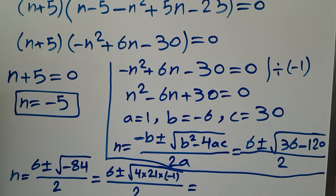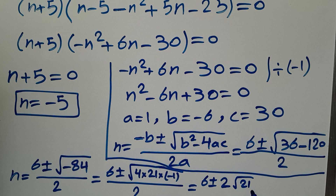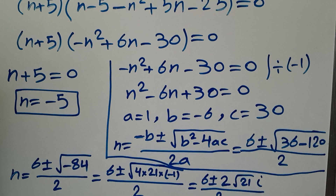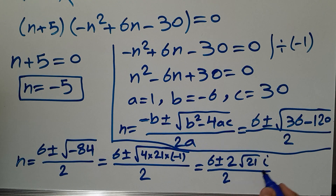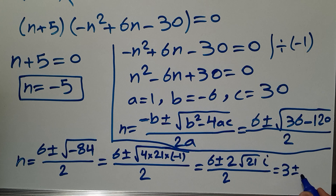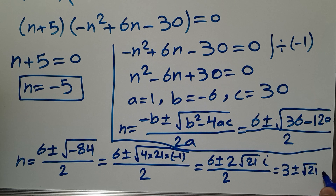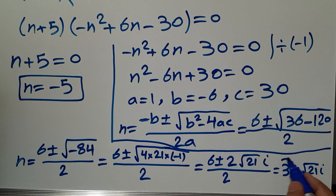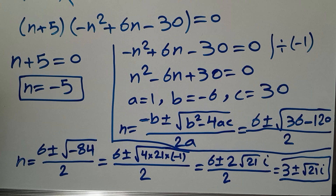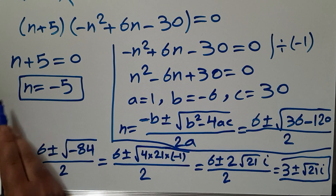So n equals 6 plus or minus square root of 4 times square root of 21 times square root of negative 1, all over 2. The square root of 4 is 2 and the square root of negative 1 is i, so n equals 6 plus or minus 2i times the square root of 21, all over 2. Dividing through by 2 gives n equals 3 plus or minus i times the square root of 21. These are two complex solutions. In total we have three solutions: one real solution and two complex solutions.